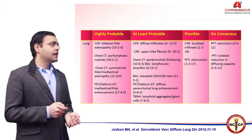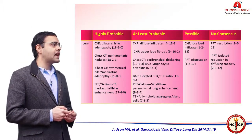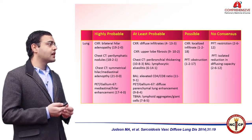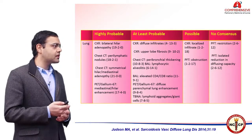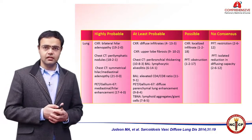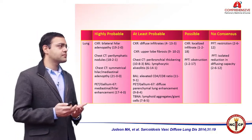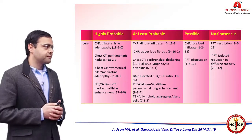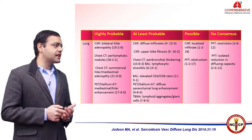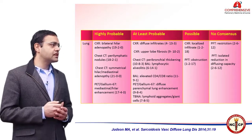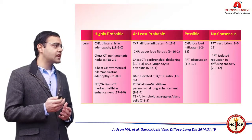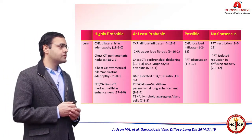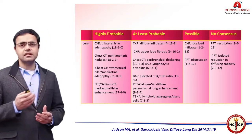For example, in the lung: if the chest X-ray shows bilateral hilar adenopathy, or CT chest shows perilymphatic nodules, or CT chest demonstrates symmetric hilar mediastinal adenopathy, or PET or gallium-67 scan shows mediastinal hilar lymphadenopathy, then the diagnosis of sarcoidosis becomes highly probable. If chest X-ray shows diffuse infiltrates, upper lobe fibrosis, or peribronchial thickening on CT, lymphocytic alveolitis in BAL, elevated CD4 to CD8 ratio in BAL, or PET/gallium showing diffuse parenchymal lung enhancement, the disease becomes at least probable.